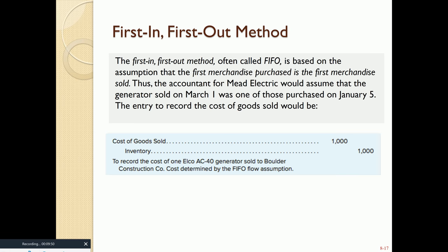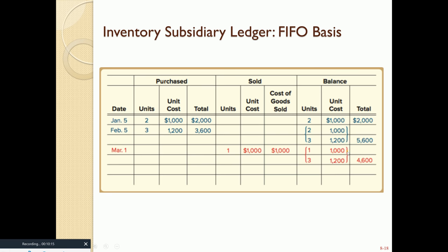The third method is FIFO — First In, First Out. If we sell one unit on March 1st, the first items in are the first ones out. Our first items in were on January 5th: two units at $1,000 each. So the one unit sold comes out of inventory at $1,000. After the sale, our updated subsidiary ledger shows one unit at $1,000 and three at $1,200 remaining. Be very mindful of how you maintain your subsidiary ledgers.